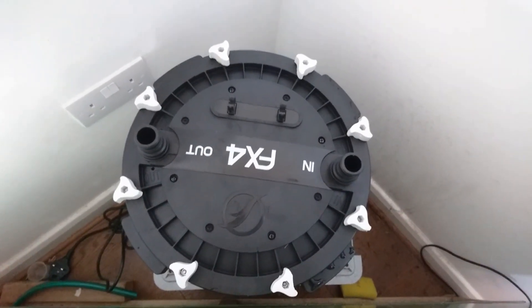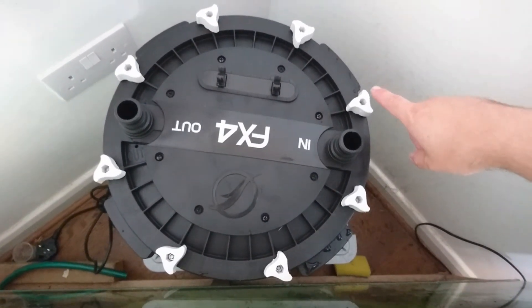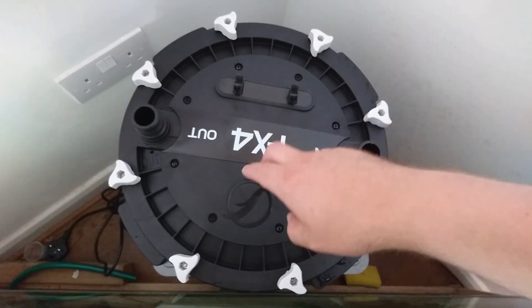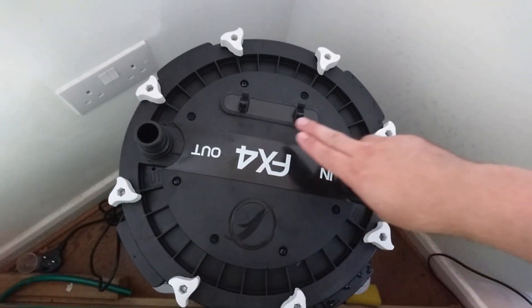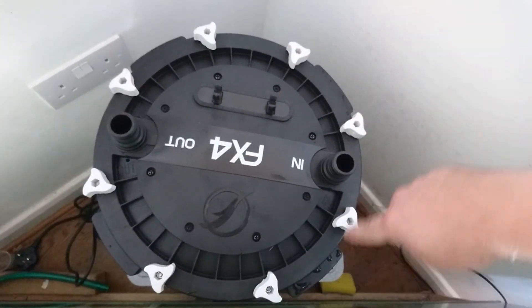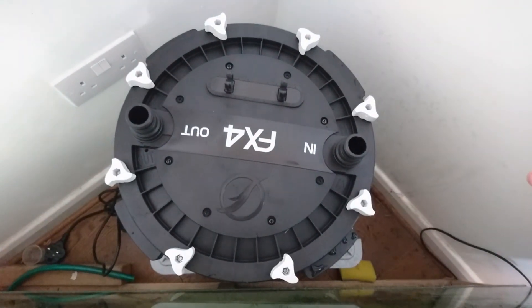When doing up the lid screws, do them alternate to each other. So rather than going round in a circle and tightening them one by one, tighten that one, then that one, then that one, and that one and so on, so that they seal evenly around the filter lid.